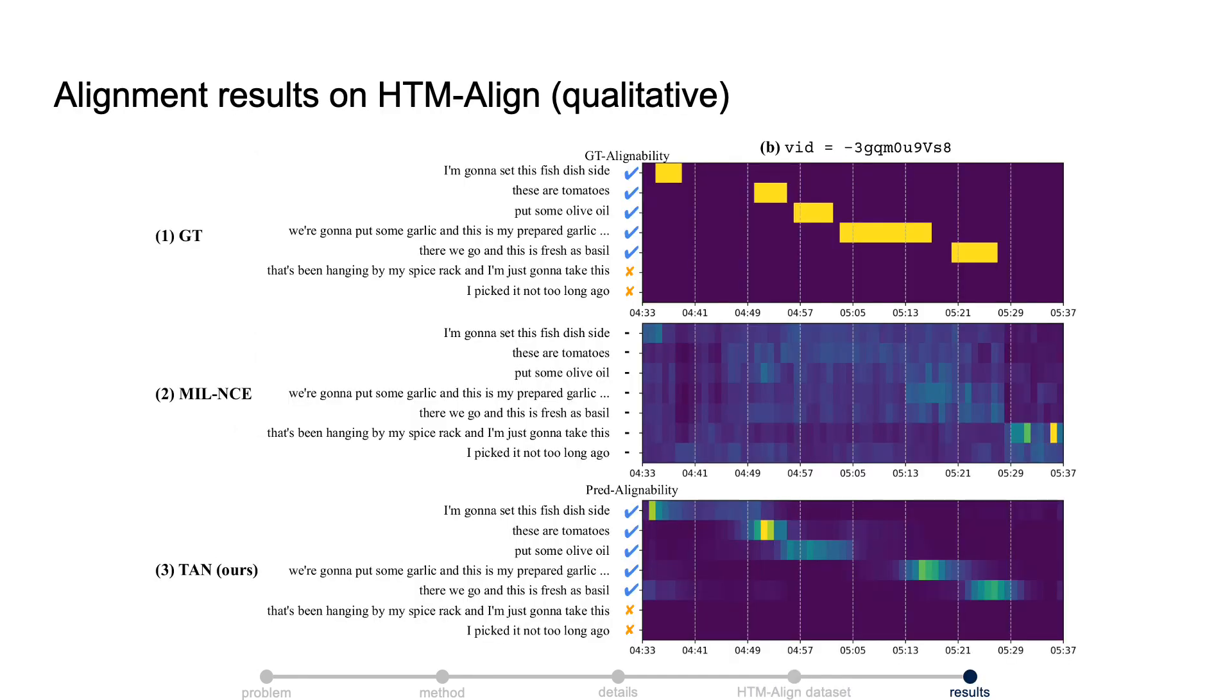This is a zero-shot qualitative result of one video in HTM Align Dataset. From top to bottom, it shows the manual annotation, the output of MU-NCE, and the output of our TAN. We can see our model gives a clear timestamp prediction and also a correct alignability prediction.